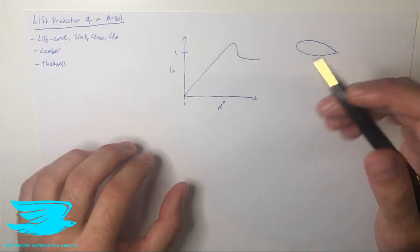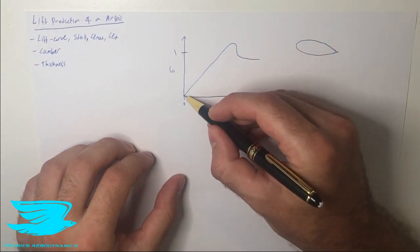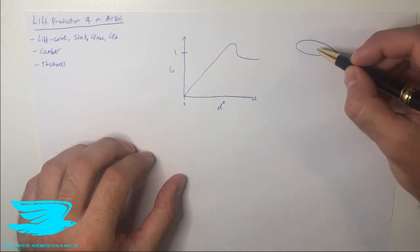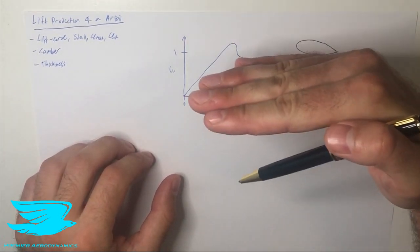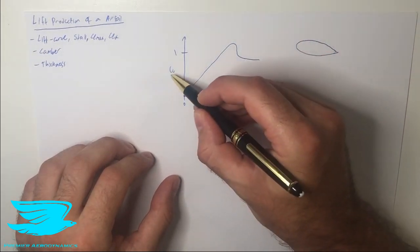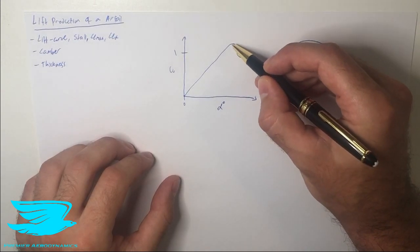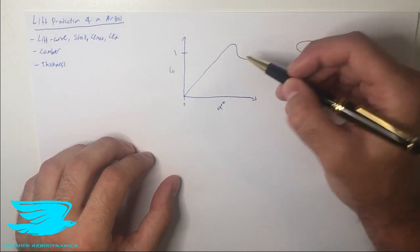So the first thing is that we have the linear part. As we increase the angle of attack, so we pitch it more and more this way, so we rotate it more, instead of facing this way it goes up and up. We get an increase in the lift coefficient and it's quite linear to begin with. We get to a point then where we get this sort of tapering off and then a drop off.